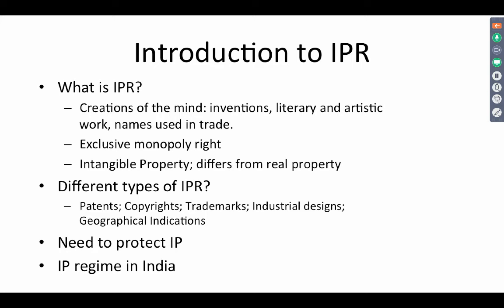Geographical indications tell you the origin of certain goods from a particular geography — for instance, Darjeeling tea. If it is covered by a geographical indication, then you would not be able to pass off any other tea as Darjeeling tea unless it comes from that geographical territory. So it is like a community mark which is held by the people who produce goods from a particular location.